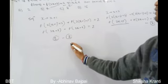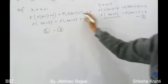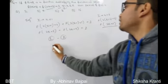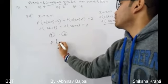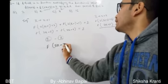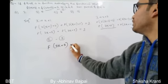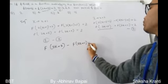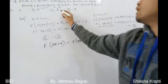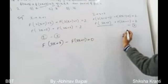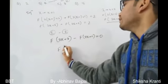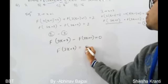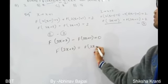To find the relation between them, we subtract equation 2 from equation 1. The f(2x + 7) terms cancel on both sides, and since the RHS of both equations is 2, we get 2 - 2 = 0. This gives f(2x + 3) - f(2x + 11) = 0.